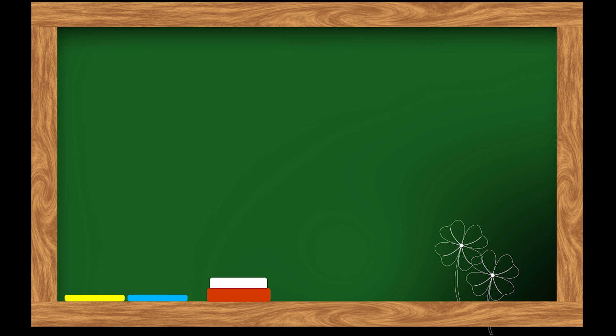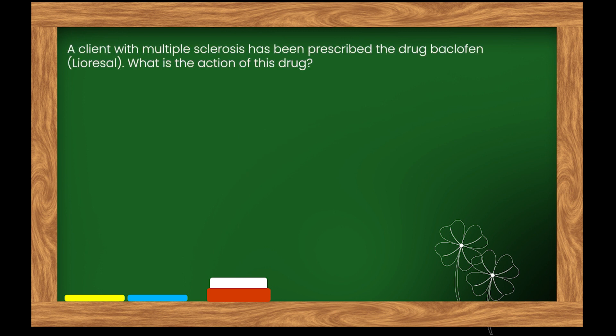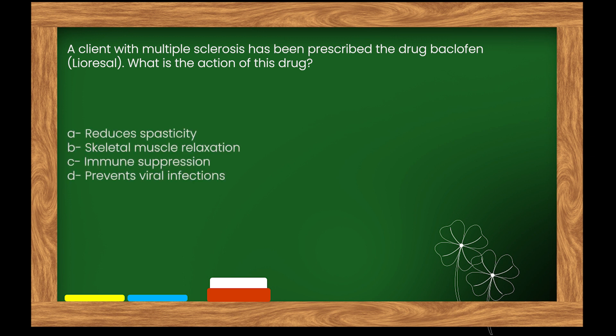Here is our next question. A client with multiple sclerosis has been prescribed the drug baclofen. What is the action of this drug? Options: A. Reduces spasticity. B. Skeletal muscle relaxation. C. Immune suppression. D. Prevents viral infections.